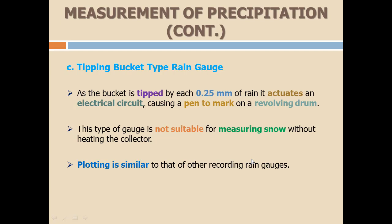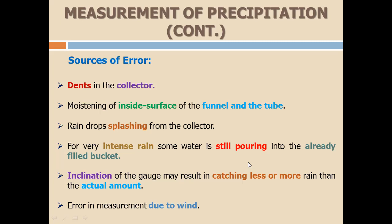Sources of error in recording rain gauges include: dents in the collector preventing accurate catch; moistening of the inside surface of the funnel and tube; rain drops splashing from the collector; for very intense rain, water still pouring into an already filled bucket; inclination of the gauge causing less or more rain than actual to be caught; and errors in measurement due to weight. These errors apply across all types of rain gauges.